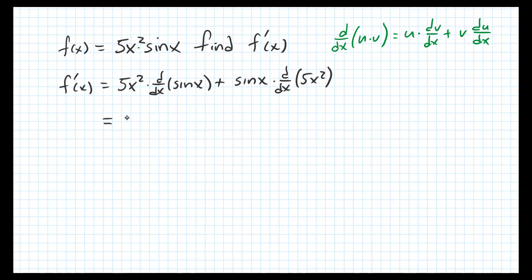Now let's calculate those derivatives. The derivative of sin(x) is cos(x), and the derivative of 5x² using the power rule is 10x. That's 2 times 5, reducing the power by 1.